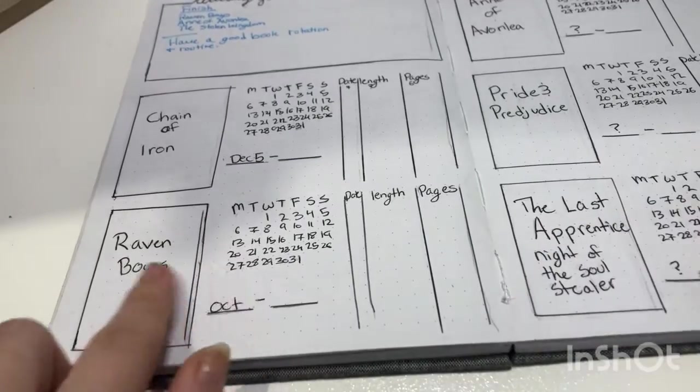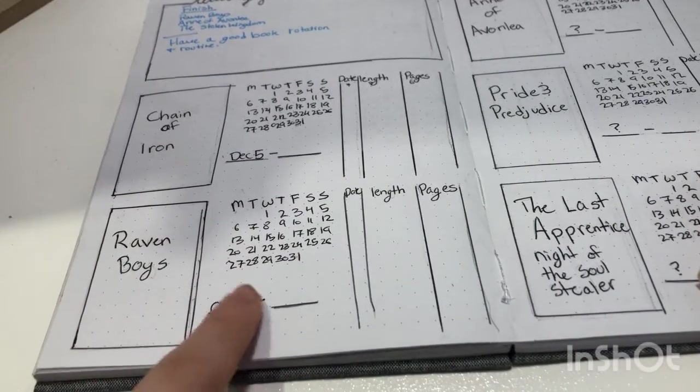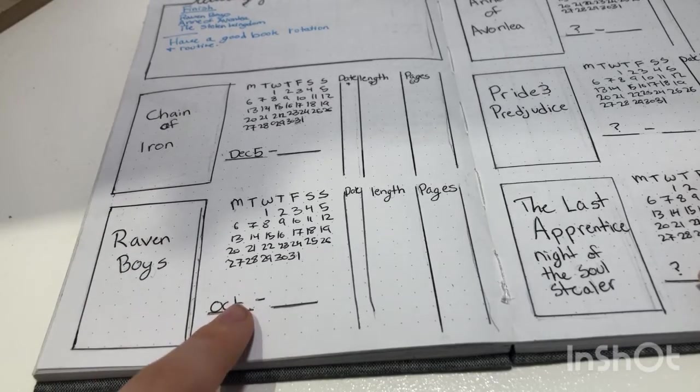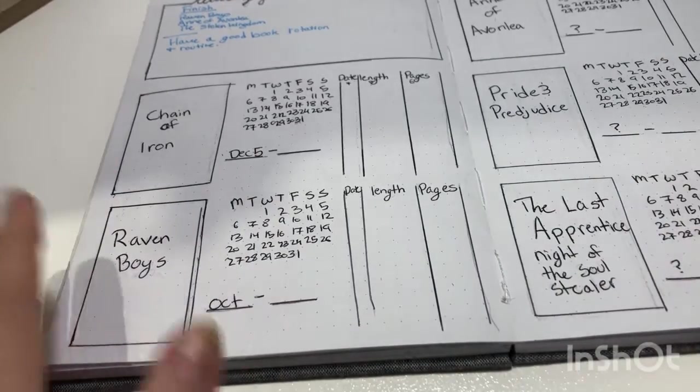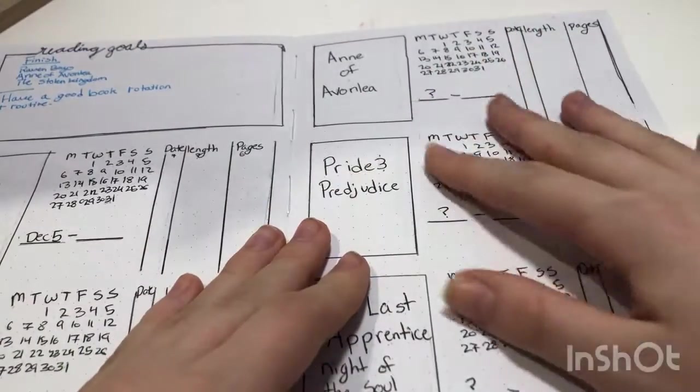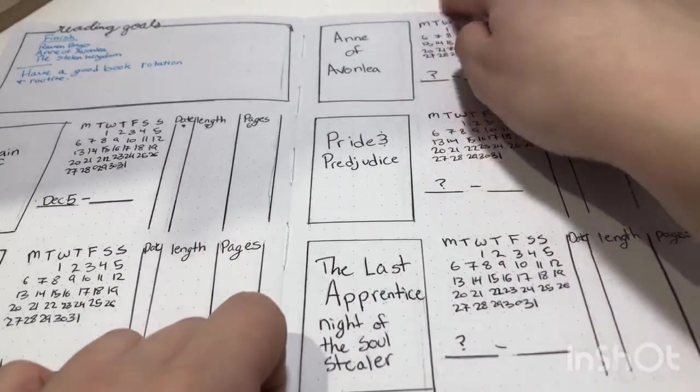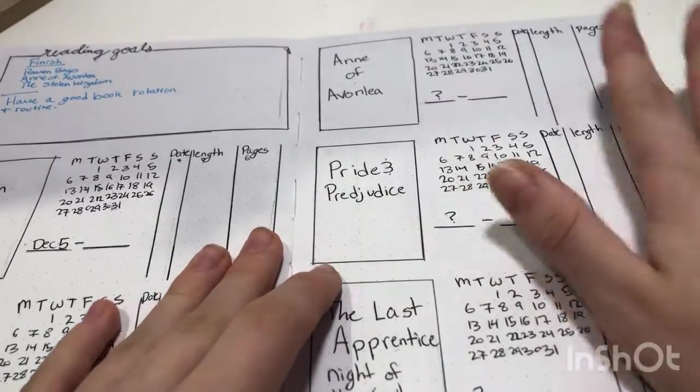And it kind of goes through that way. And I started Raven Boys in October. I don't know exactly what date, so that's a mystery. But I kind of go through. I also didn't write a date for these guys because I've been reading them for a lot longer, so I don't remember.